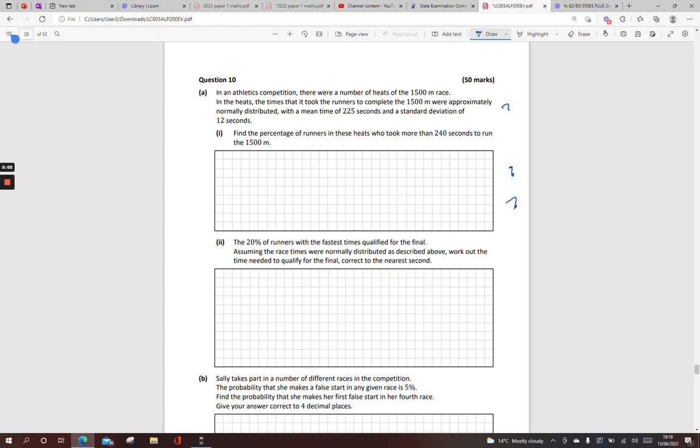Right, question 10, the stats question here. In an athletics competition there are a number of heats in the 1500 metre race. In the heats, the times it took the runners to complete the race were normally distributed with a mean of 225 seconds. So that's my mu, and a standard deviation of 12 seconds.